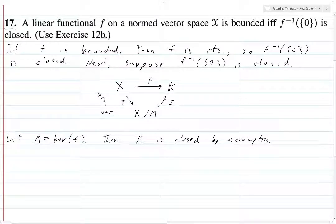So x maps to this quotient x plus m, and then this is the injection from f bar to k. To prove f is continuous, it suffices to prove the projection pi and the other map, f bar, are continuous.